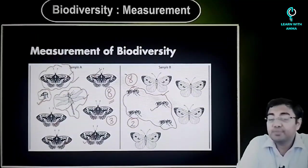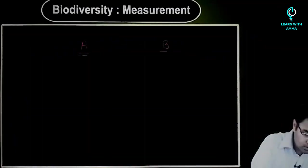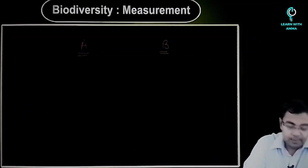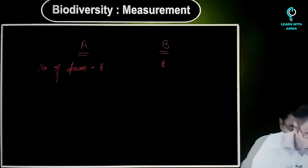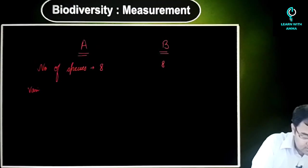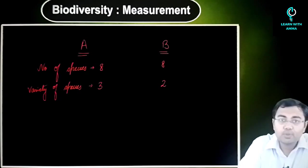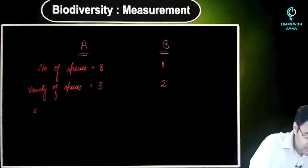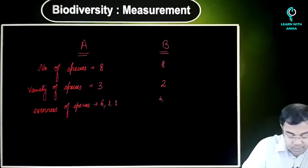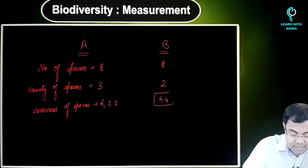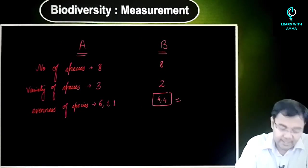Let's say we have to compare sample A and sample B. Number of species in both the cases: eight and eight. Variety of species: sample A has three, sample B has two. And if I talk about the evenness, the distribution in A was six, one, and one, whereas in B it was four and four — so it is more even. This is one advantage that B has over A.